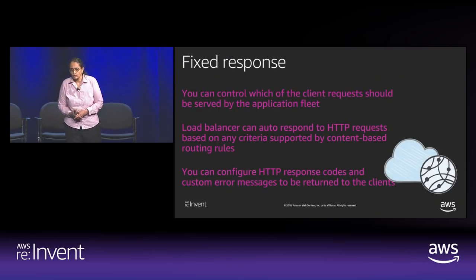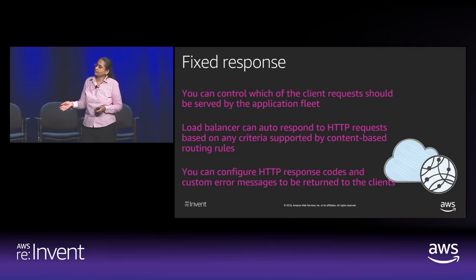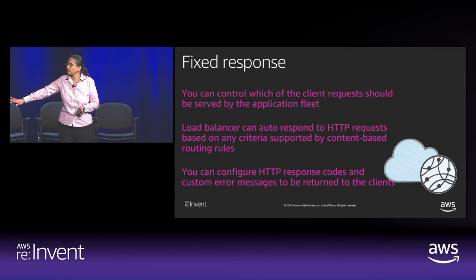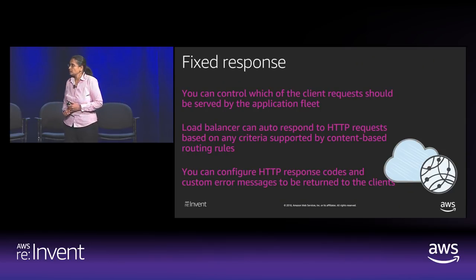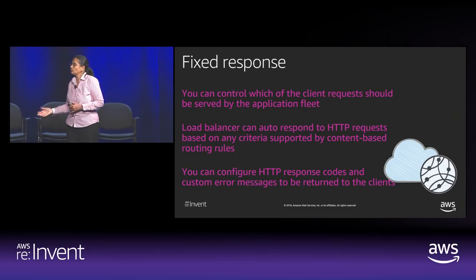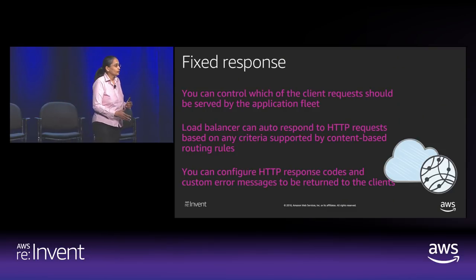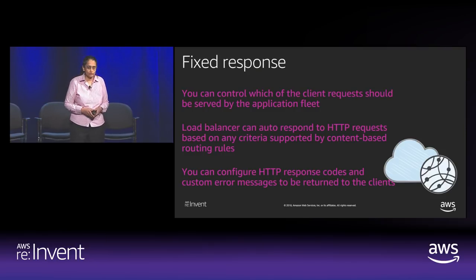The fixed response action, launched a few months ago, lets you offload some responses to the load balancer. The load balancer responds directly without reaching your backends. You might want the load balancer to respond back for specific error conditions — set up the rule matching path-based or hostname-based conditions, and let the load balancer handle it. Most customers use this for maintenance scenarios: set up a fixed error code and the load balancer responds for you.